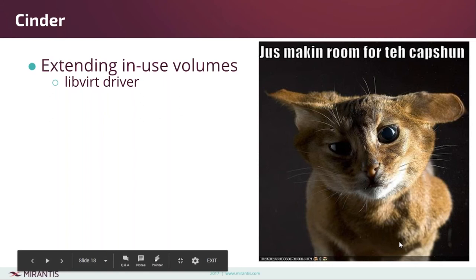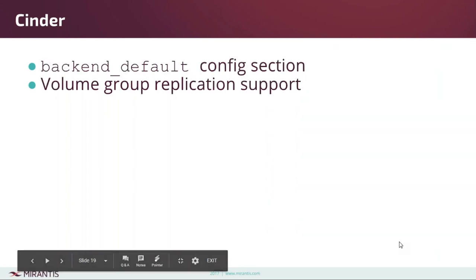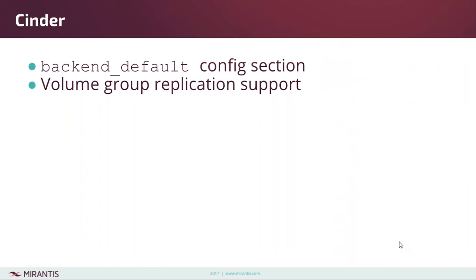For operational convenience: if you've got a fairly consistent environment you can use the backend default section to set configuration for all of your backends rather than having to set it individually for each one. Also, you can let users define groups of volumes to be replicated to a secondary backend, as opposed to having to rely on the operator to back up an entire backend — though you do need to check whether your particular backend supports that.